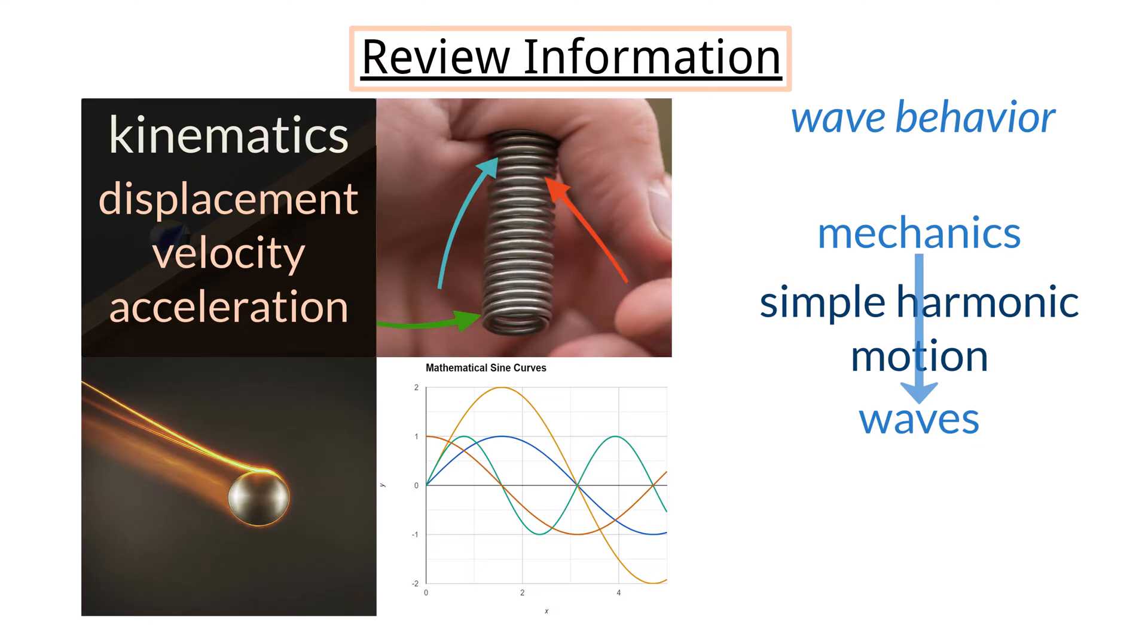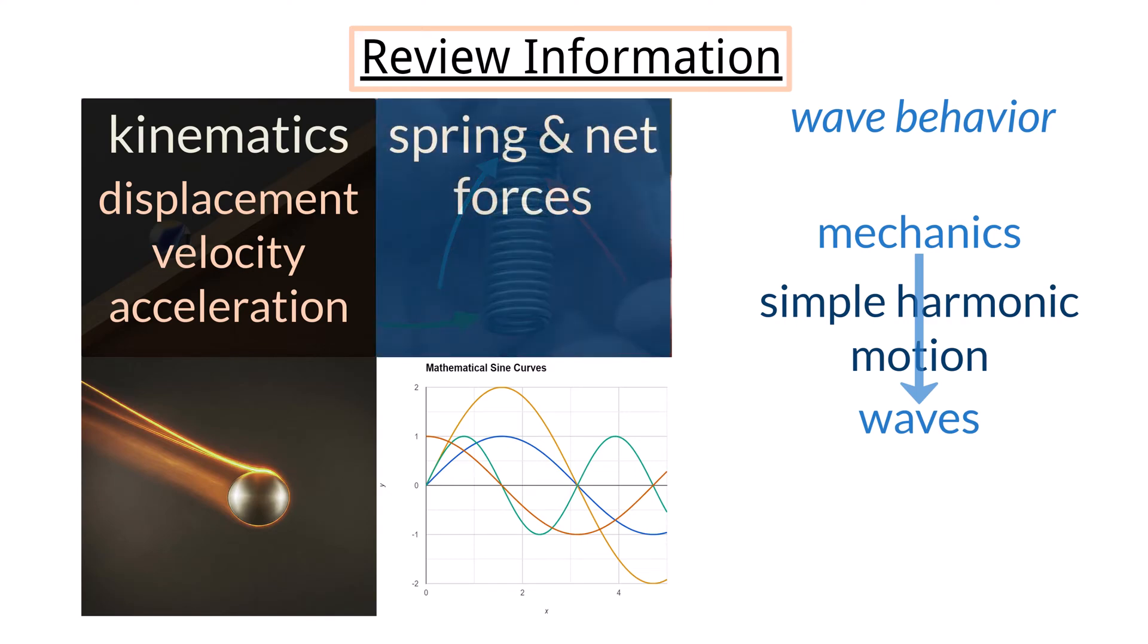And acceleration is the change in an object's velocity over time. Spring and net forces - you should know what a spring constant is, as well as how a net force determines the acceleration of an object or system. The spring constant is a measure of the stiffness of a spring. The net force on an object is the result of the vector addition of all forces on an object.